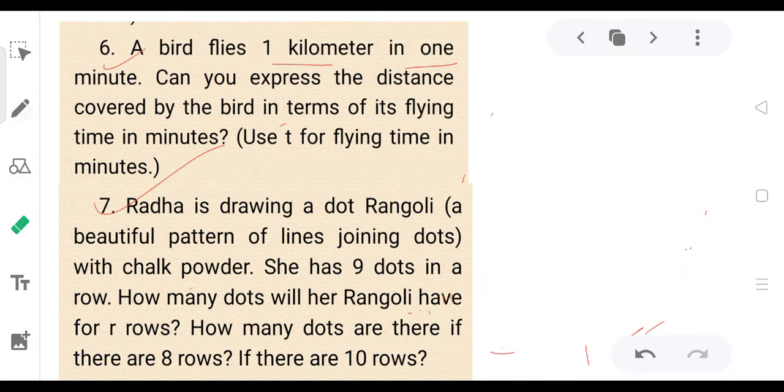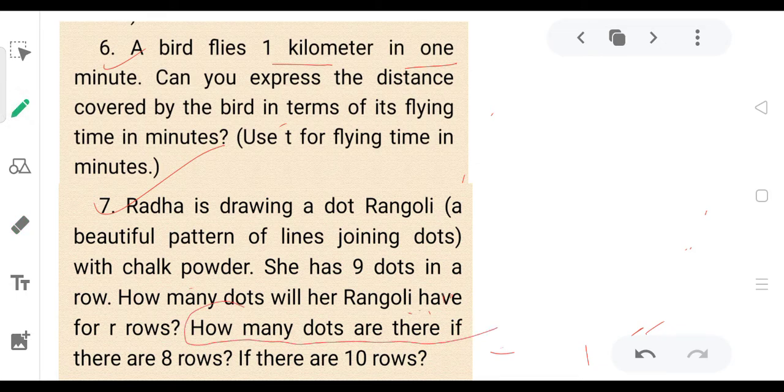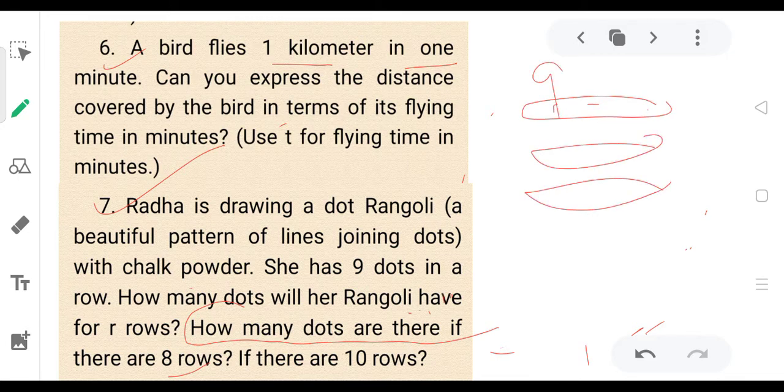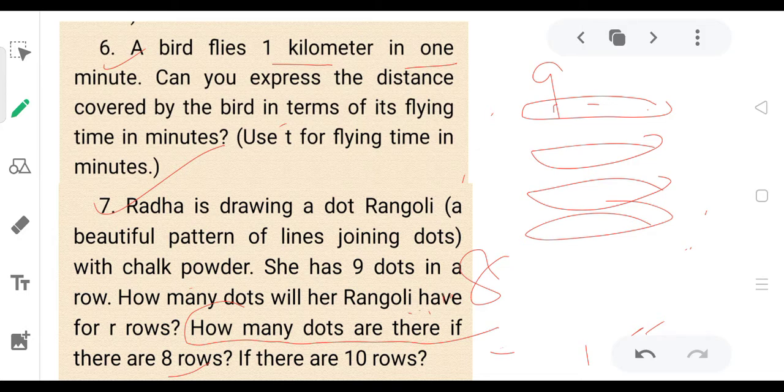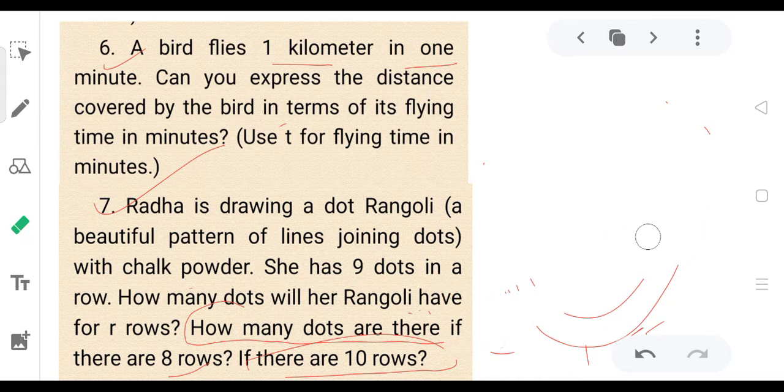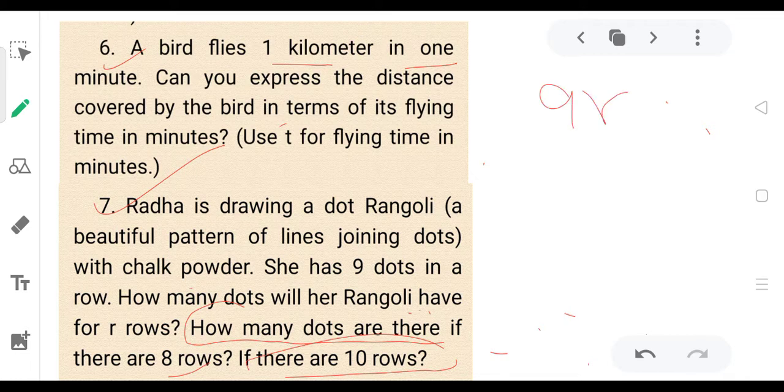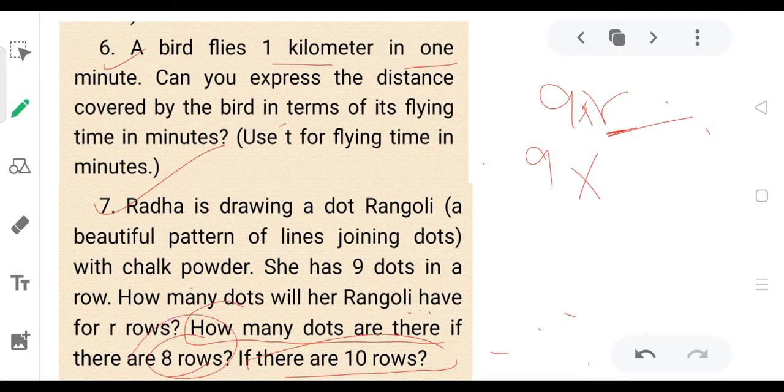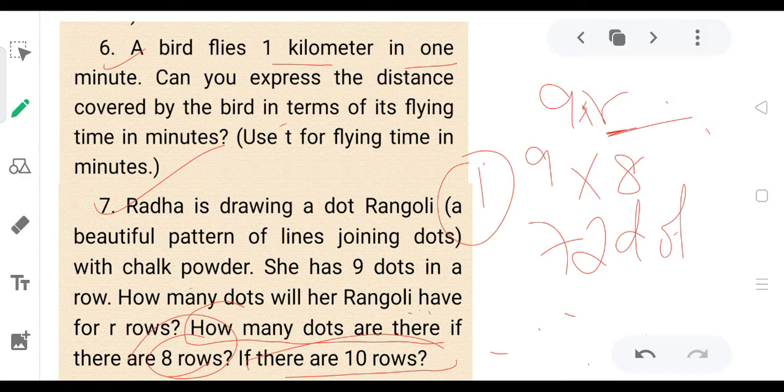How many dots are there if there are 8 rows? You have already found the rule, 9R, 9 into R. So the row is 8, so 9 into 8 is 72. So total dots is 72.